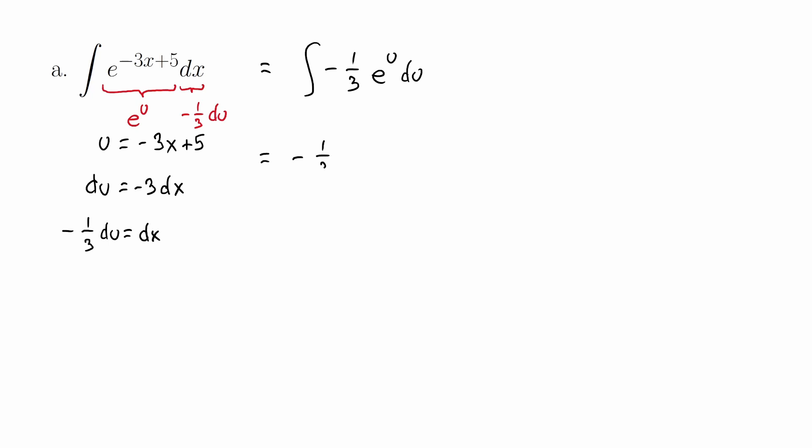Negative 1/3 is a constant multiple, and an antiderivative for the exponential function is itself. The last step is just to back substitute our u, which was negative 3x plus 5. We get our antiderivative negative 1/3 e to the negative 3x plus 5, and don't forget the plus c. All right, let's go ahead and get to problem 2.